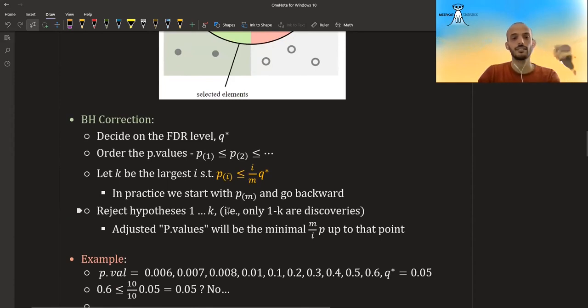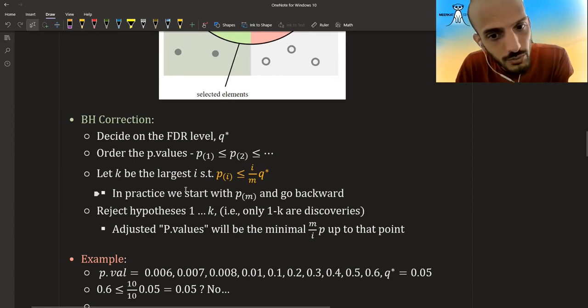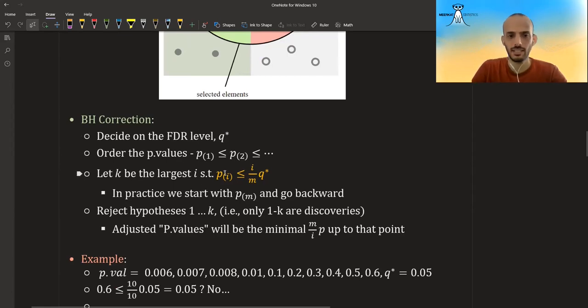So Benjamini and Hochberg, they didn't just define this new quantity called the FDR, they also suggested a procedure which they proved can control the FDR. So if you want that your false discovery rate will be less than 0.05 or less than 0.1, they offered a method that supposedly should do this. So you decide on some FDR level, let's call it Q star, and you order the P values from P1 all the way to PM. So you order it, and then what you actually do, you start with the largest P value, and you check if the index of it divided by M times the value that you chose, Q star, if the P value is less or equal than this quantity.